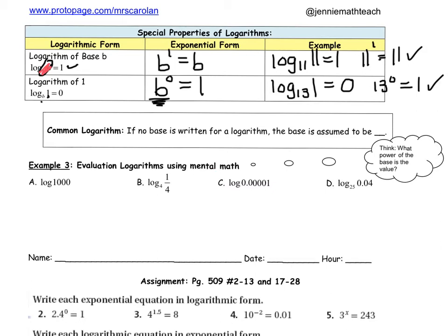Sometimes you'll see that there's no base. Sometimes you'll see a log and then a number, but then no base. Like, look at example A right here. See how it just says log of 1,000, and this one right here, B, has log base 4. If they don't write a base, then it's called the common log, and it's so common that we just skip over writing it, and you assume the base is 10.